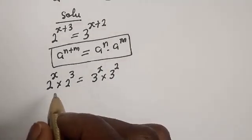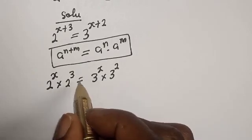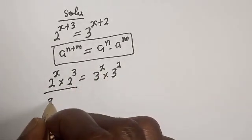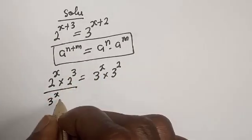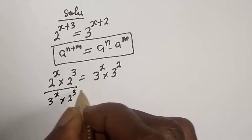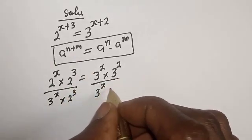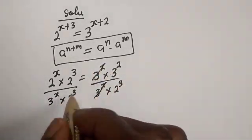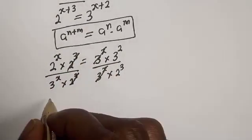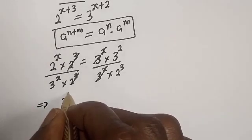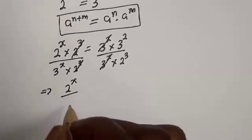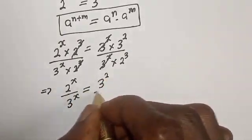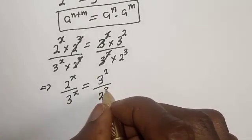Let's divide both sides of this equation by 3 raised to power x and 2 raised to power 3. That is, this divided by 3 raised to power x and 2 raised to power 3, and also this divided by 3 raised to power x multiplied by 2 raised to power 3. This gives us 2 raised to power x divided by 3 raised to power x, equal to 3 squared over 2 raised to power 3.